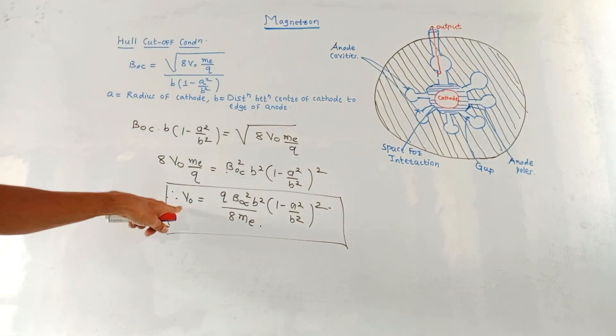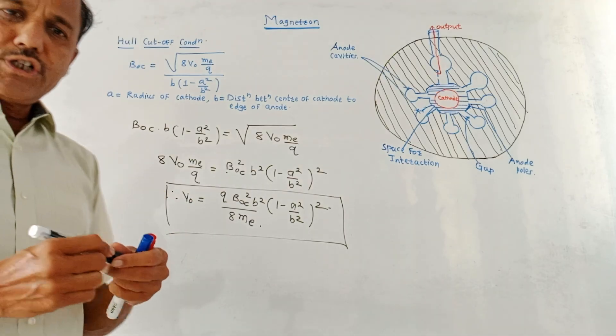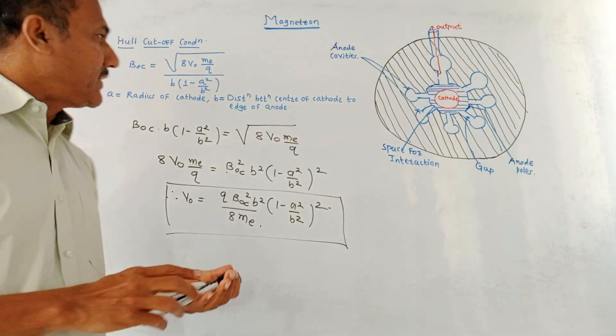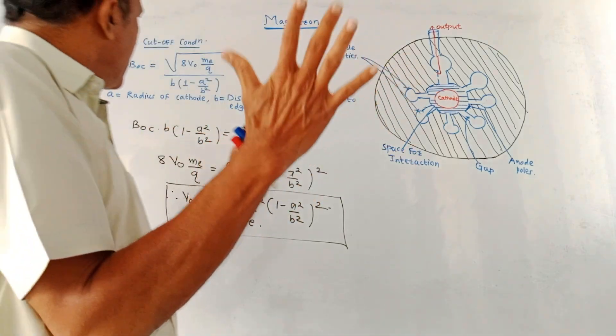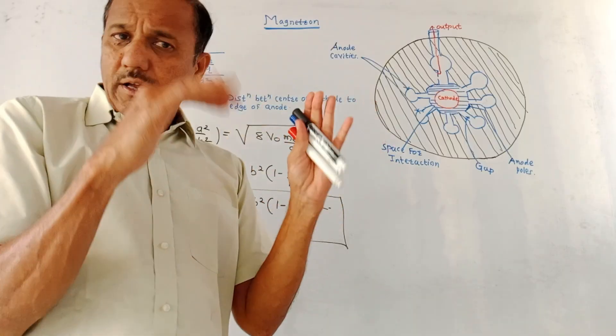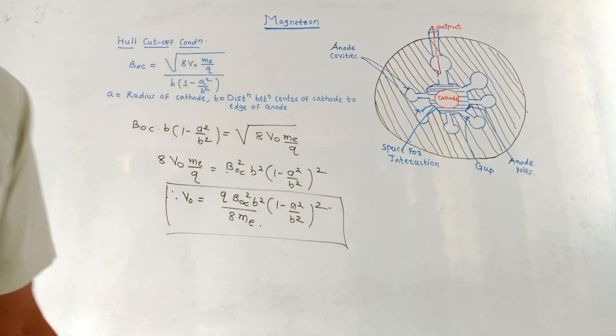Under the cutoff condition the notation will be V₀c, that is voltage for cutoff condition. This particular condition is called the Hull cutoff condition for the magnetron.